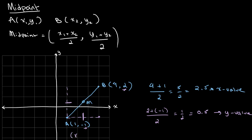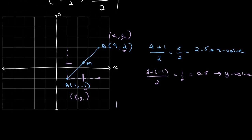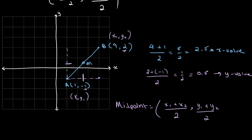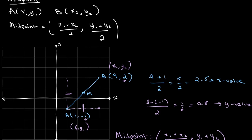If A is the point (x1, y1) and B is the point (x2, y2), we can write the midpoint as: x value equals (x1 plus x2) over 2, the point halfway between the two x values, and y value equals (y1 plus y2) over 2, the point halfway between the two y values. This is the same equation we stated at the start.